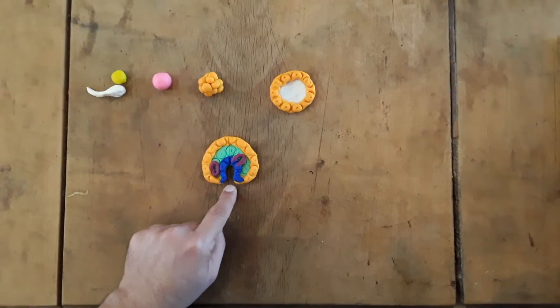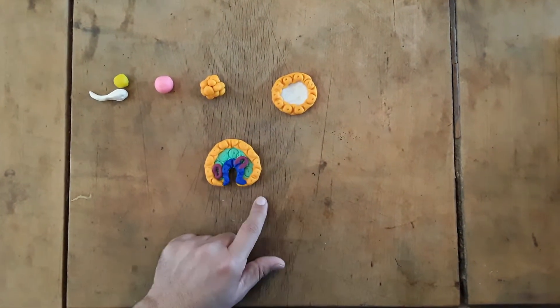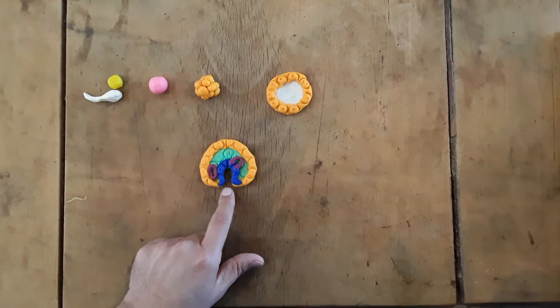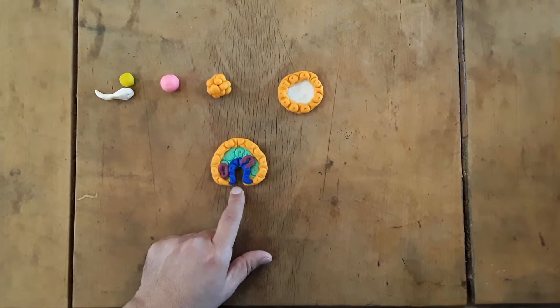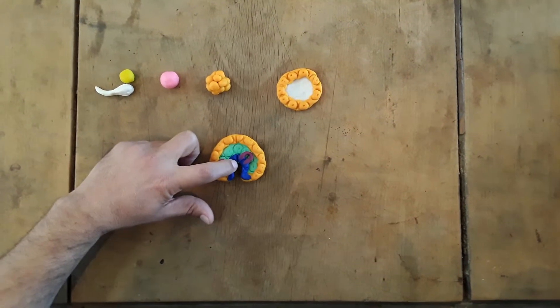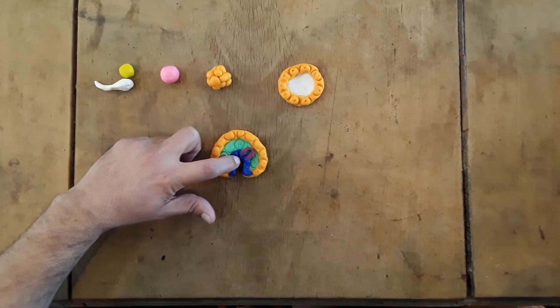The blastopore down here, depending on whether it's going to be a protostome or deuterostome, is going to turn into a mouth or an anus. This empty space right in here is the archenteron.